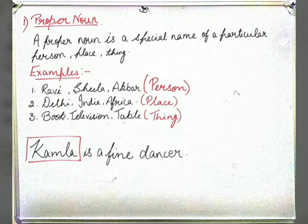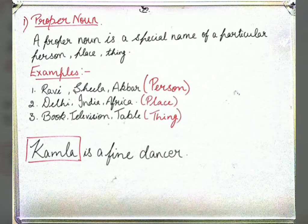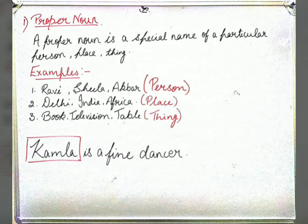A proper noun is a special name of a particular place, person, or thing. For example, Ravi, Sheila, Akbar — these are names of persons, so they are proper nouns. Always remember: when there is the name of a particular person, that is a proper noun. Delhi, India, Africa — names of places — are also proper nouns. Book, television, table can be proper noun or common noun depending on the sentence context.